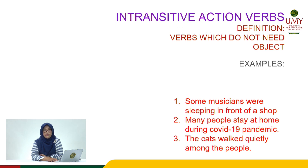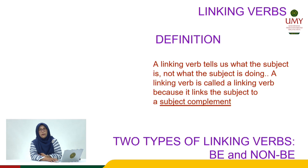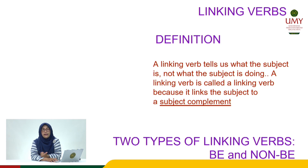Now what about the linking verb? A linking verb tells us what the subject is, not what the subject is doing. It is called a linking verb because it links the subject to a subject complement. There are two types of linking verb: linking verb B and linking verb non-B.